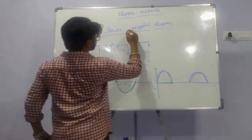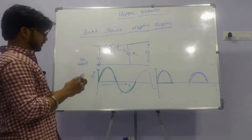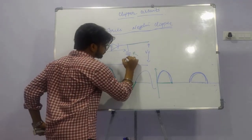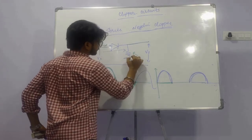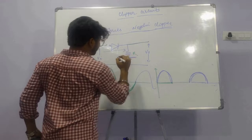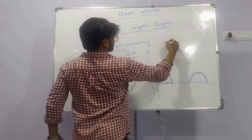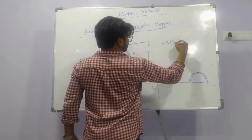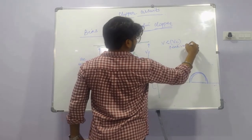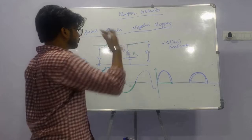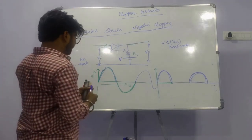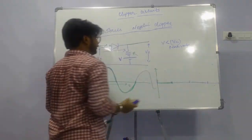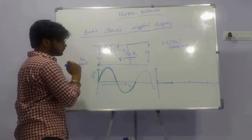The next topic is the bias series negative clipper. Here we have a DC voltage source V, provided that V is less than the peak voltage of Vi. We have the same input sinusoidal wave — let's see what happens to the output waveform.